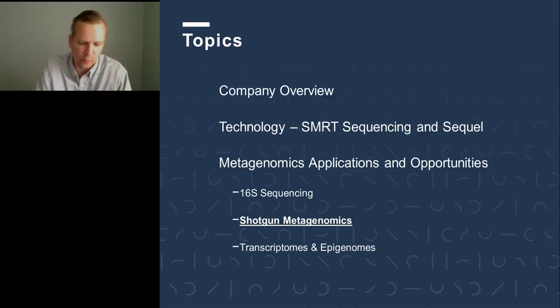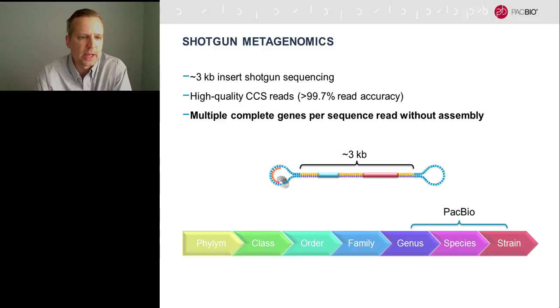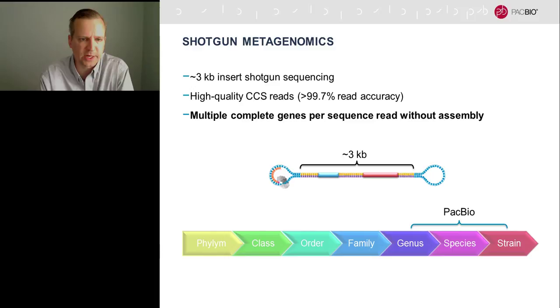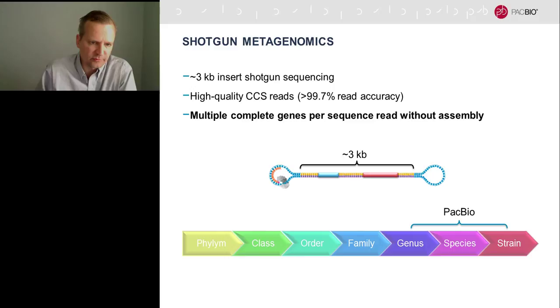Moving to shotgun metagenomics, there is now a movement toward understanding communities more comprehensively by sequencing entire genomes. PacBio's unique CCS capability allows much higher resolution for shotgun metagenomics. Using two- to three-kilobase fragments sequenced multiple times in CCS mode yields read accuracy greater than 99.7%, providing a much more contiguous view of genomic sections — often multiple complete genes per read — requiring no assembly. PacBio is therefore very powerful for high-resolution shotgun metagenomics at the genus, species, and strain level.